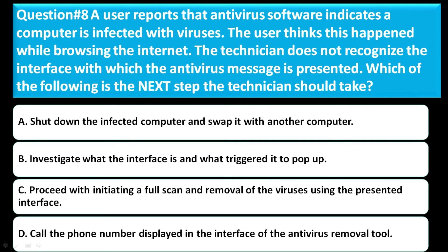Option A: shut down the infected computer and swap it with another computer. Option B: investigate what the interface is and what triggered it to pop up. Option C: proceed with initiating a full scan and removal of the viruses using the presented interface. Option D: call the phone number displayed in the interface of the antivirus removal tool. The correct answer for this question is option B — investigate what the interface is and what triggered it to pop up.